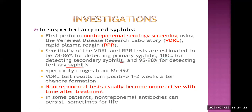Sensitivity is the percentage of true positive cases — the ability of the test to detect true positives. Specificity is the ability to detect true negatives. Specificity ranges from 85% to 99%. VDRL test results turn positive one to two weeks after chancre formation. Non-treponemal tests usually become non-reactive with time after treatment, telling us whether treatment was successful.